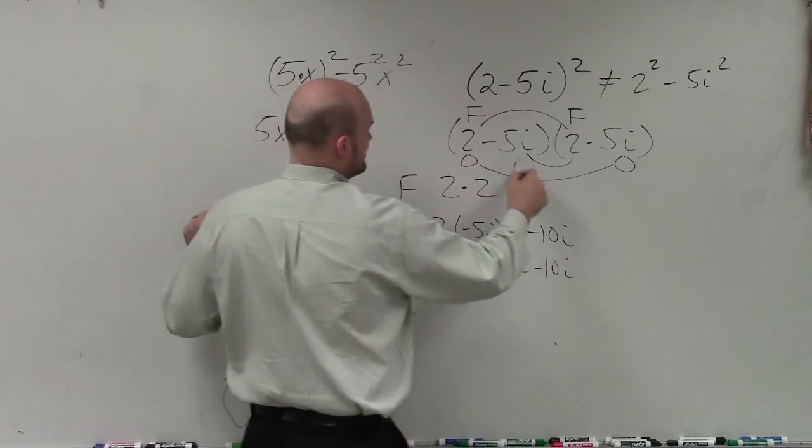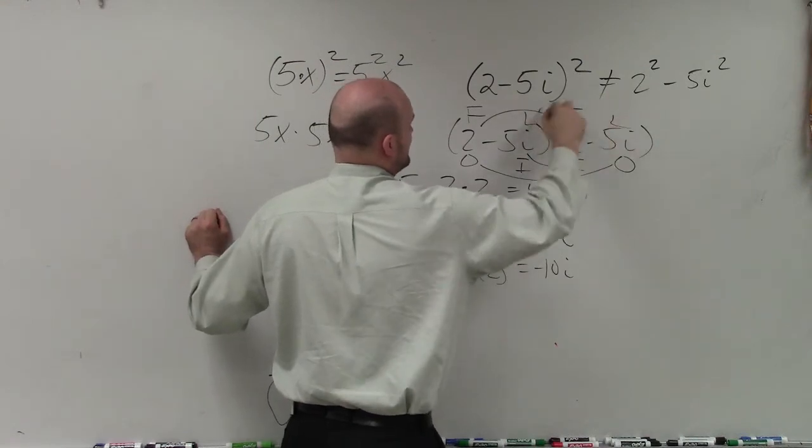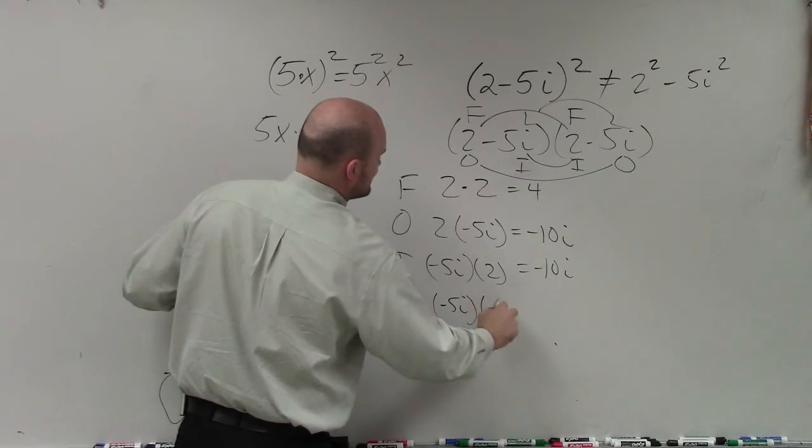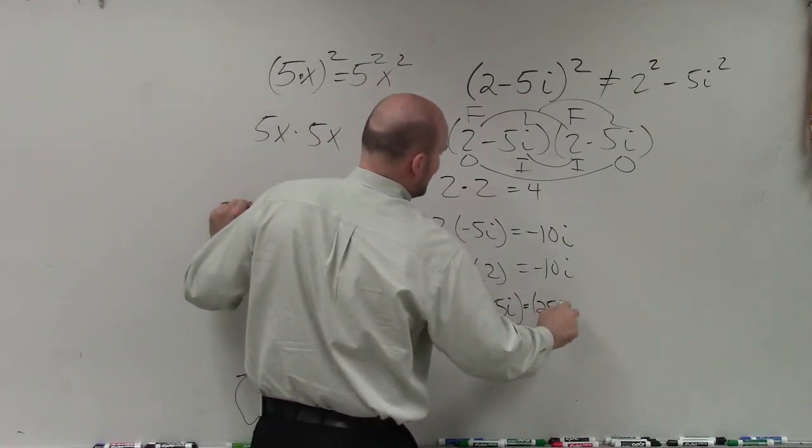And then we do the last terms. Oh, those are the inner. Forgot to label those. Then we do the last terms here, which is going to leave us with negative 5i times negative 5i, which will leave us with positive 25i squared.